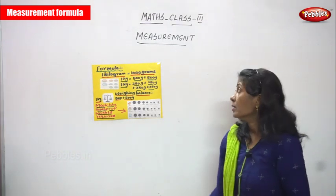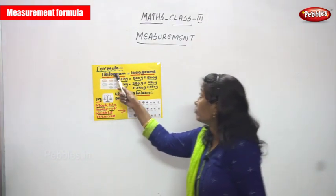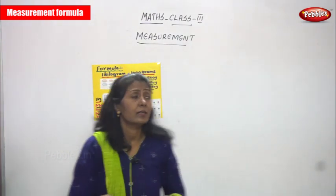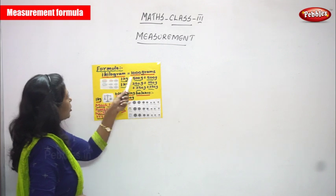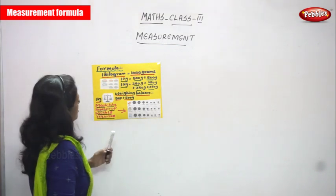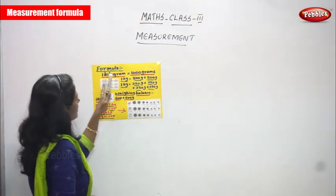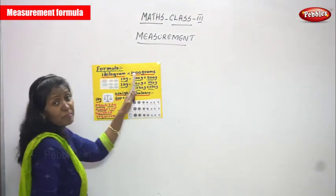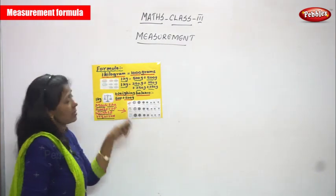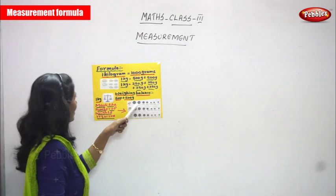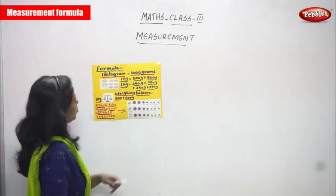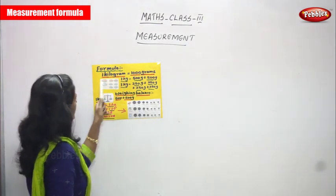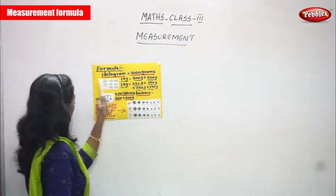Now we are going to see the formula for measurement of mass. One kilogram is equal to thousand grams.